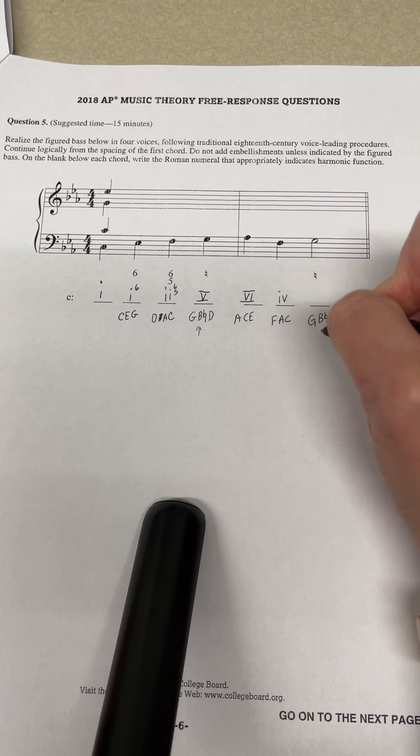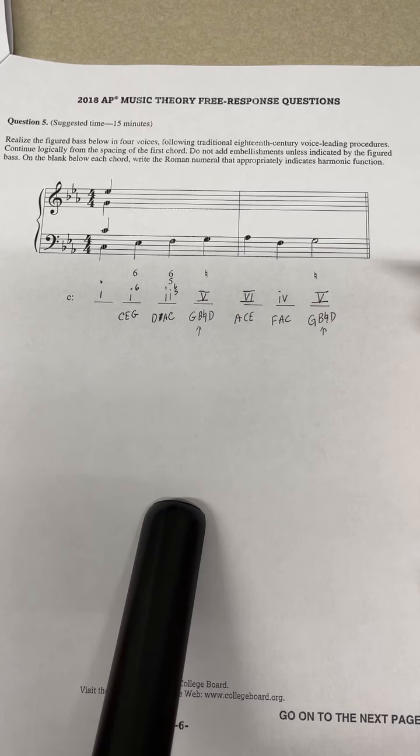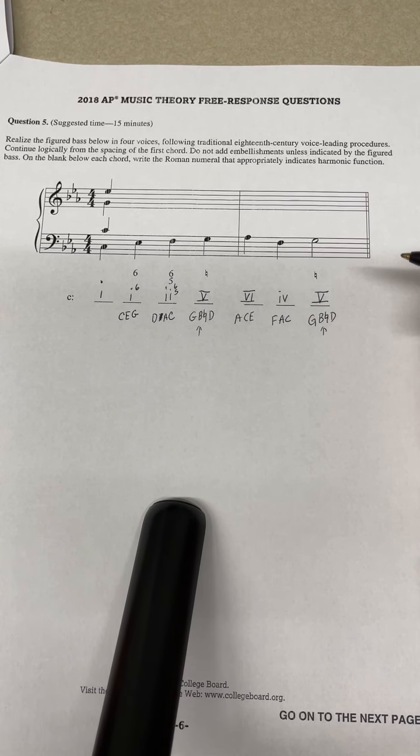Here we have A C E six, F F A C four, and G B natural D five. Okay, so now I'm going to want to put my soprano in.